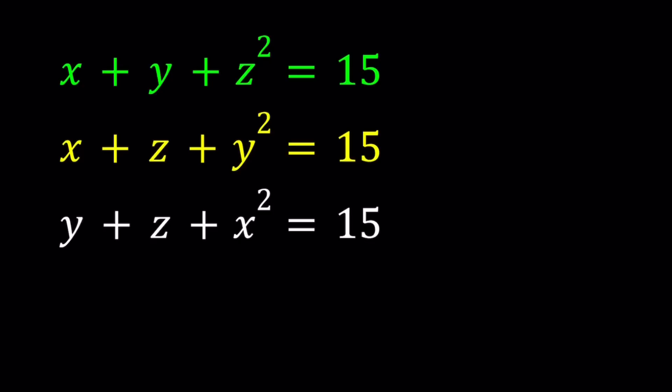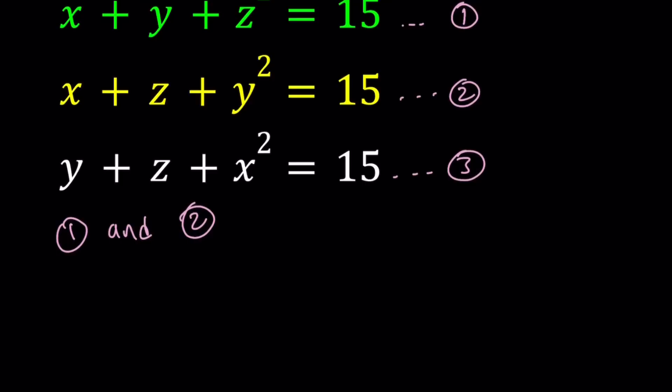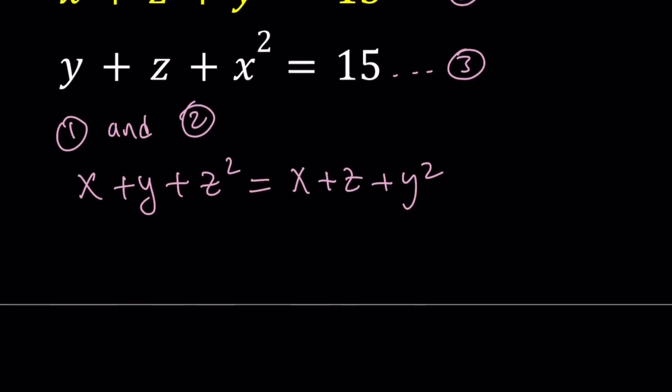I'm going to number the equations to make it a little easier. So equations number one, number two, and number three. And then let's go ahead and take one and two. Since they're both equal to 15, I'm going to set them equal to each other. So this means x plus y plus z squared equals x plus z plus y squared. Forget about the 15 for now.